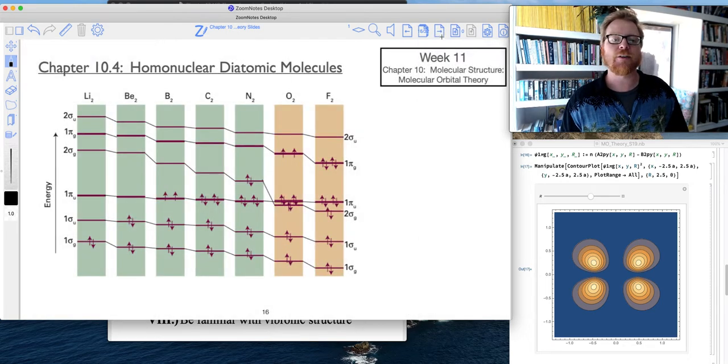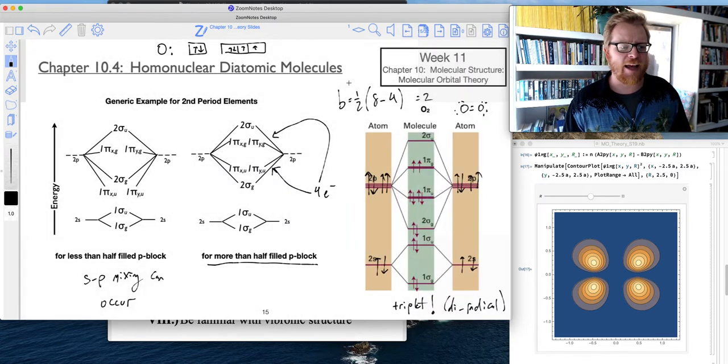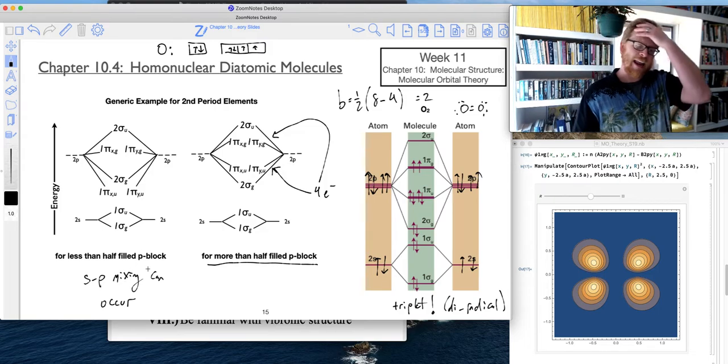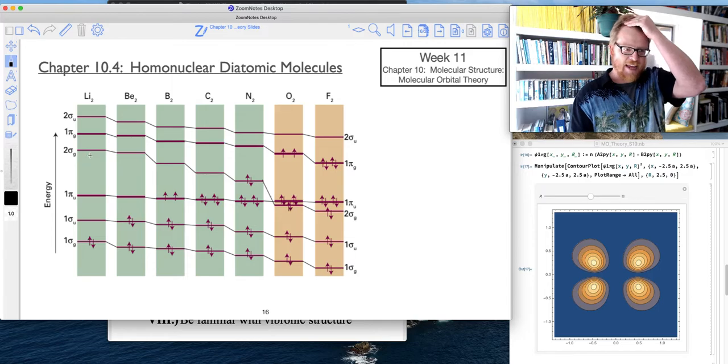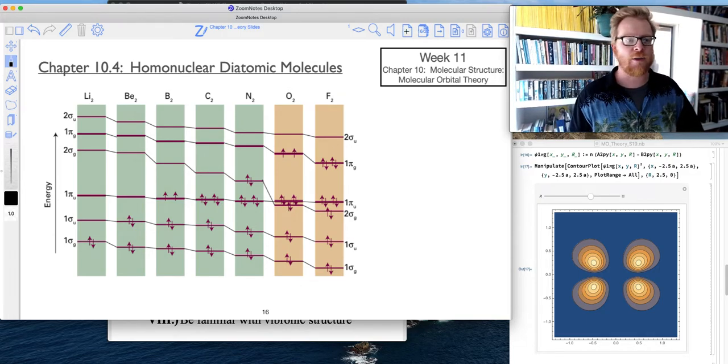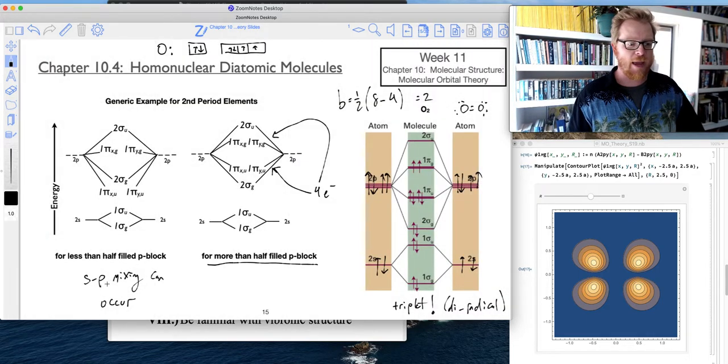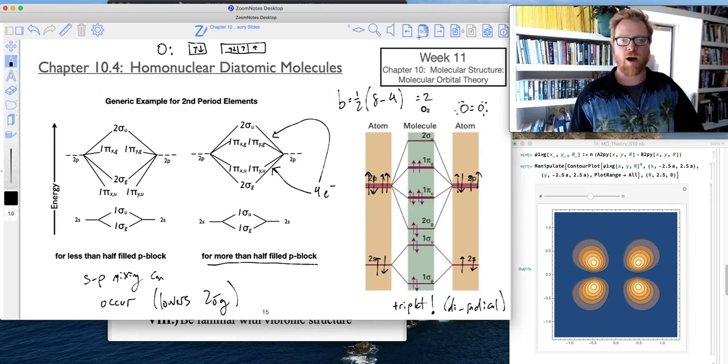So let's look at the series of simple homonuclear diatoms. And oh my, wait, no, I lied to you guys. I knew I had that backwards. So I'm sorry about that. S and P mixing can occur, and it's the S and P mixing that greatly lowers the two sigma G orbital. I knew that didn't make sense when it came out. So S and P mixing can occur, lowers two sigma G. Apologies there.